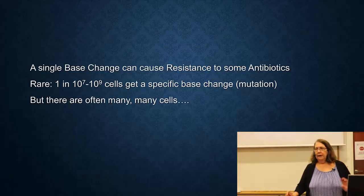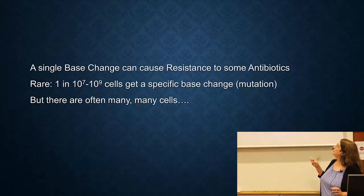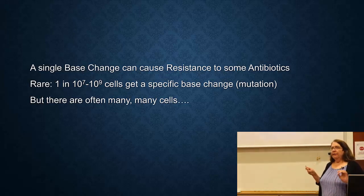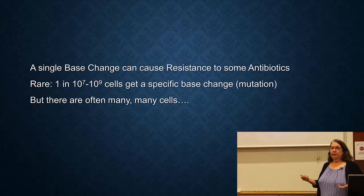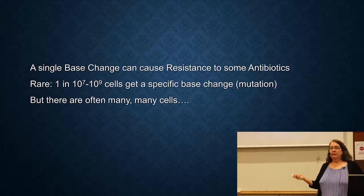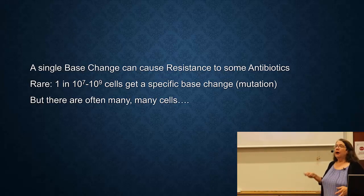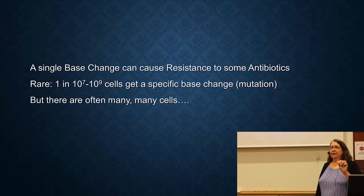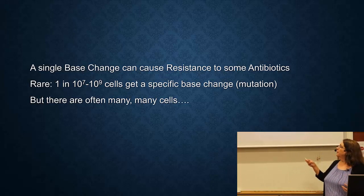A single base change can cause resistance to some antibiotics. These mutations are rather rare as far as DNA replication goes - on the order of one in 10^7 or one in 10^9 cells. But there are many, many cells. One of those little colonies has like 10^7 cells. So when you have such big numbers, this small mutation rate isn't so small.